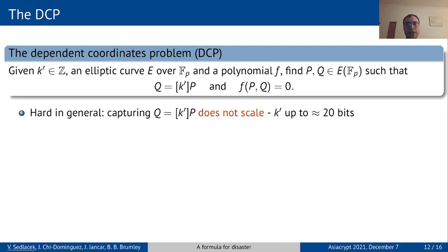But the problem is that the DCP seems to be hard in general. It is not clear how to capture the relationship between P and Q, because the strategy of using division polynomials does not really scale. It allows you to recover maybe 20 bits, which is not negligible but far from enough.